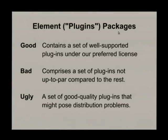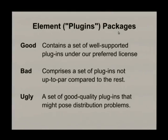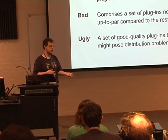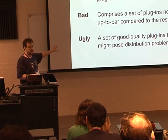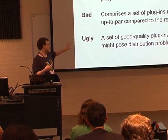GStreamer comes in a kind of weird set of packages — the good, bad, and ugly plugin packages. The good ones are basically all your open source, free, unpatent-encumbered stuff that actually works really well. The bad ones are generally things that have yet to be fully developed and are still in a rough state. The ugly ones are those that might pose problems if you're in a country which has software patents. You can run most of this stuff without ever using the ugly pipelines, but if you want to do things like H.264, which is patent-encumbered, you're going to need the ugly set.